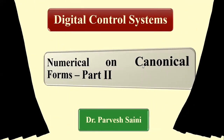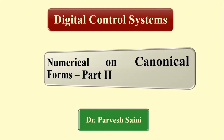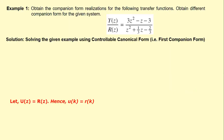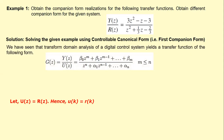In today's lecture, we will discuss one numerical about the conversion of a transfer function to a companion form using controllable canonical form. This is an alternative method. In our previous lecture we discussed this numerical, and now we will see how we can convert it into the equivalent state space model using controllable canonical form through an alternative approach.